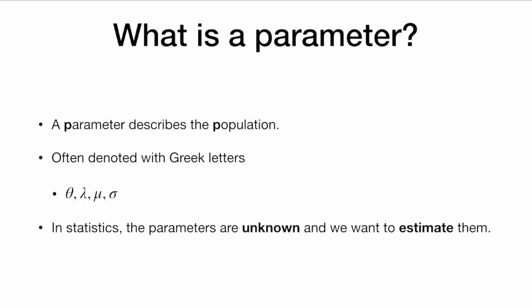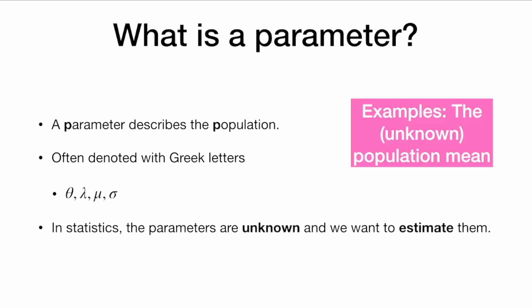What is a parameter? A parameter describes the population — again, we have this alliteration: 'p', 'p'. Parameters are often denoted by Greek letters like theta, lambda, mu, and sigma in statistics. The parameters are unknown, and we want to estimate them. For example, we might not know the population mean, so we want to estimate what it is. We use a statistic to estimate the parameter.